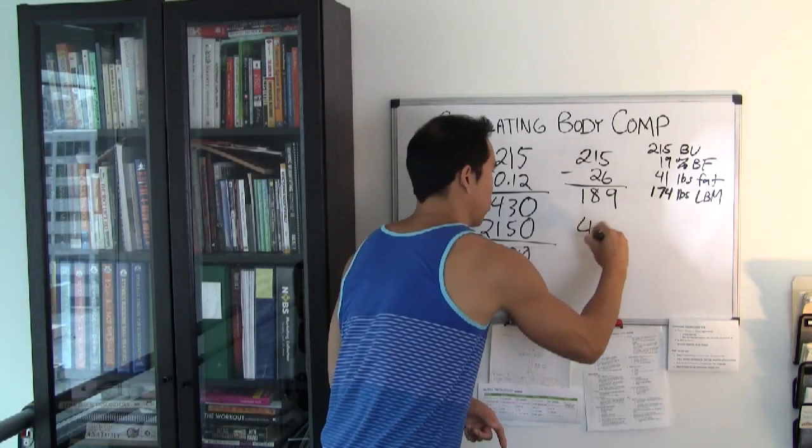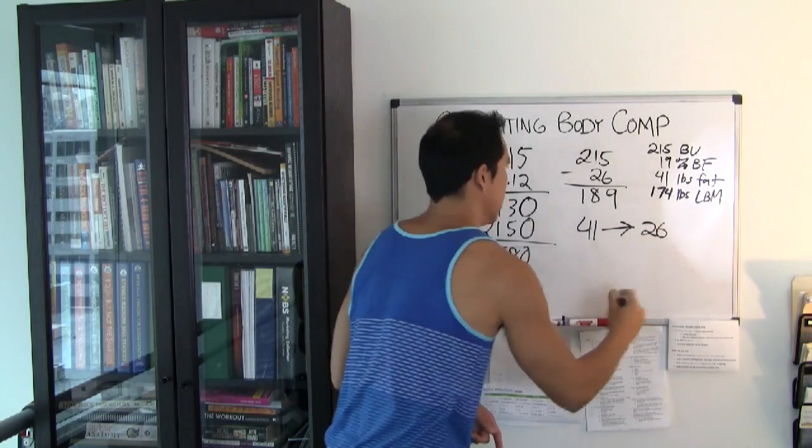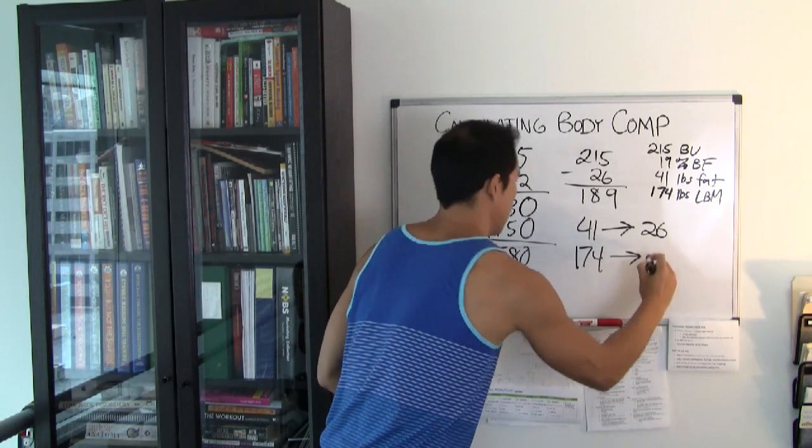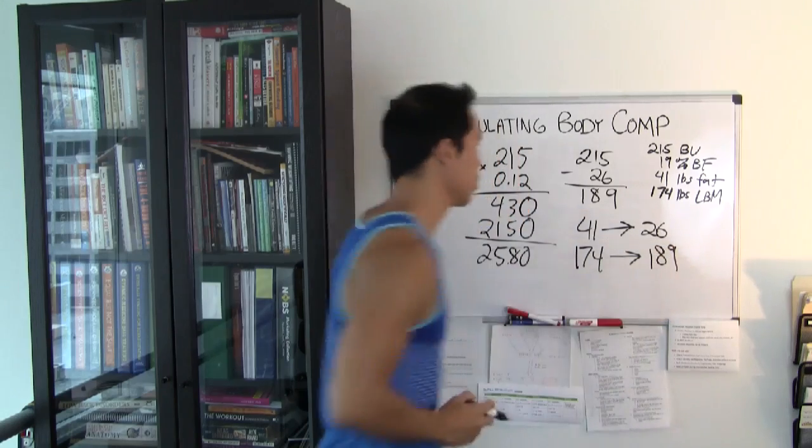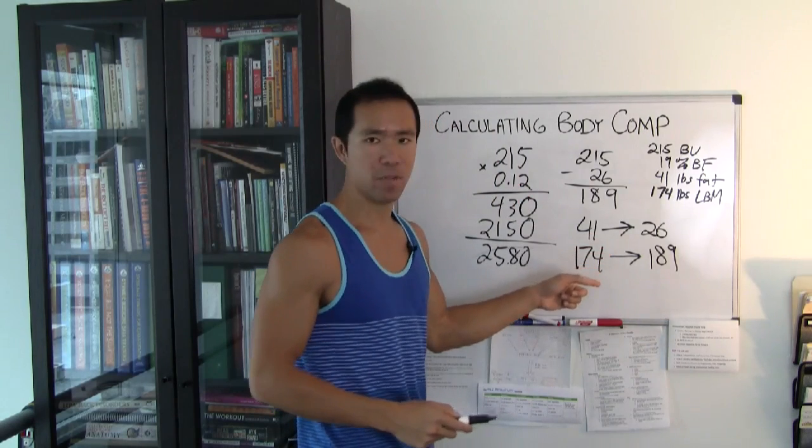So, to do that, you've got to go from 41 pounds of fat to 26, and lean mass, you've got to go from 174 to 189. So you're losing 15 pounds of fat and gaining 15 pounds of muscle.